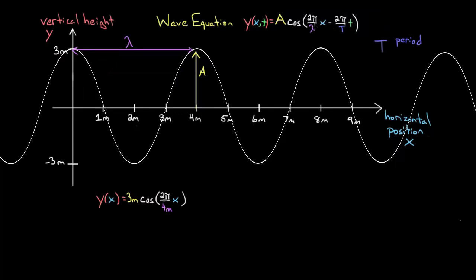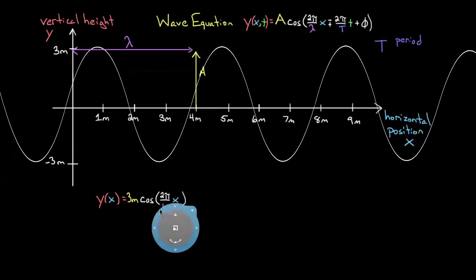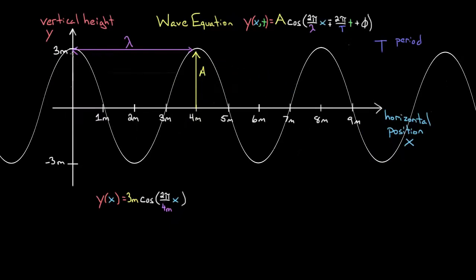So this is the wave equation. The cosine could have been sine if your wave is better described that way. The negative caused this wave to shift to the right, so a negative term describes a wave moving to the right, and a positive term describes a wave moving to the left. You can also add one more constant phase shift term to account for cases where the graph starts neither as a pure sine nor cosine. But in our case it started at a maximum, so no extra phase shift is needed. This is the wave equation — a function of position and time that tells you the height of the wave at any horizontal position x and any time t.